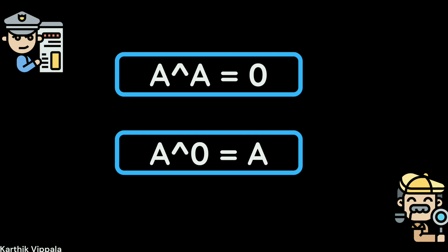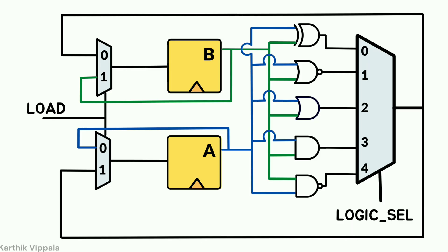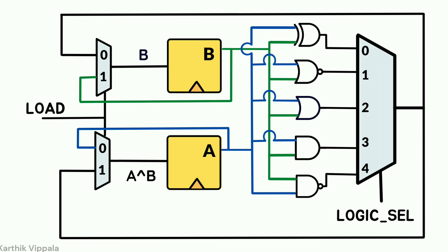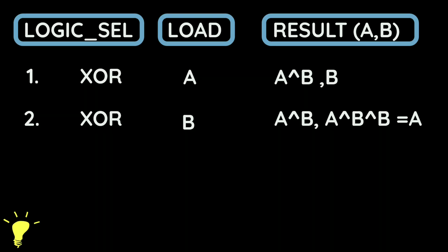To analyze this, let's go back to the circuit. In the first clock cycle, the logic select will be XOR gate, and the load value I will load into A. So the output of the multiplexer will be A XOR B, which will be loaded into register A, and B will have the previous value, so it is B.